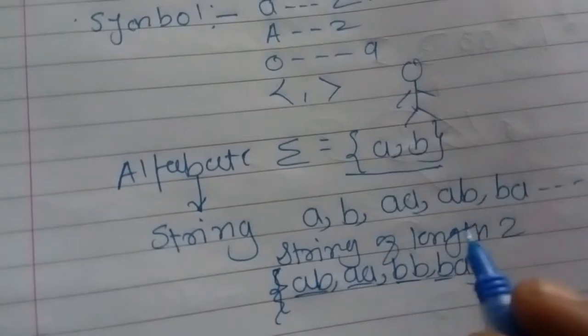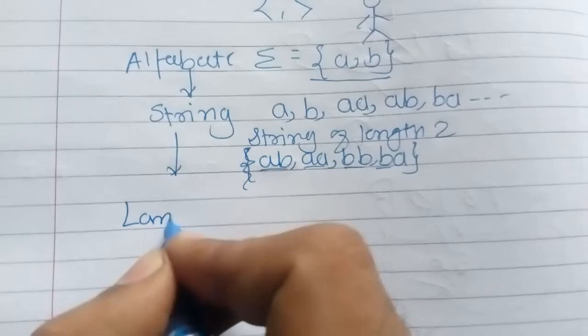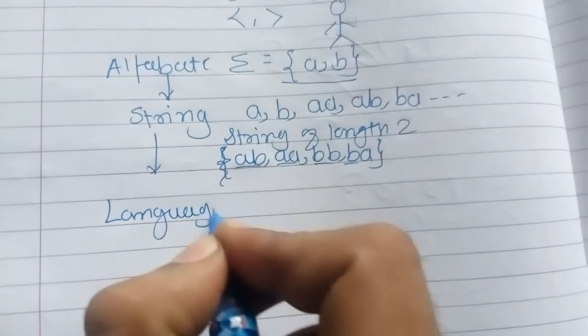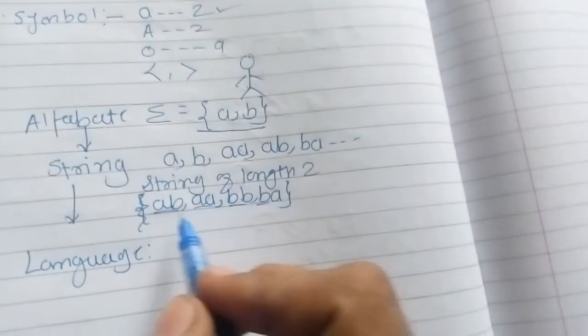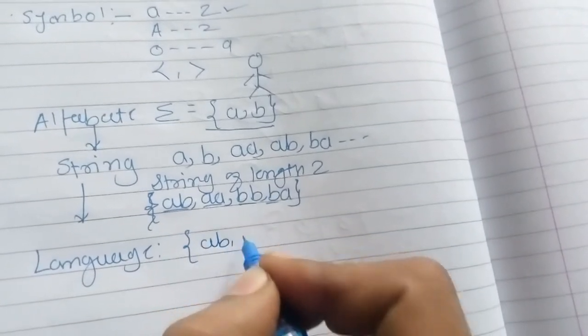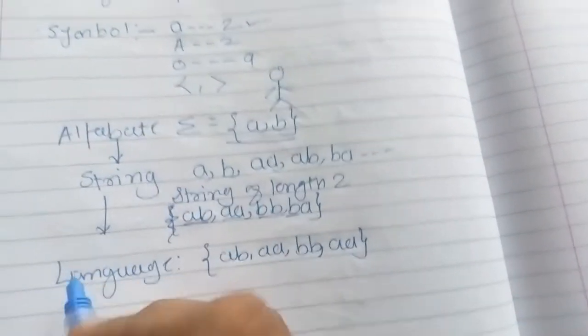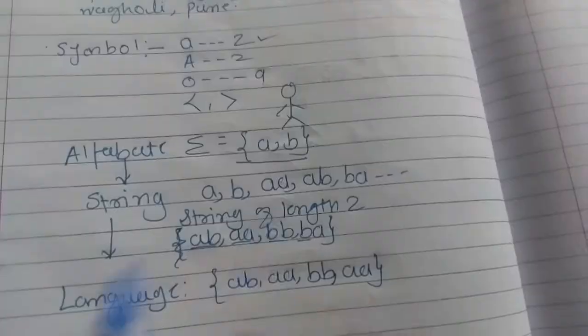Next, from strings we have language. Language is very important. Language is the finite collection of strings. If I put these strings in brackets, this is basically a language of length two. This is the simple basics of finite automata.